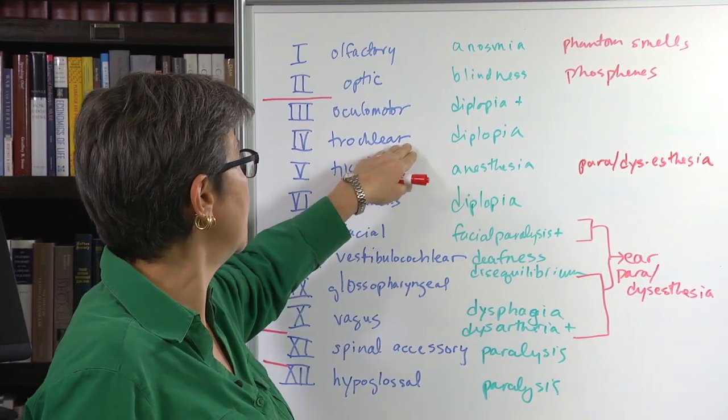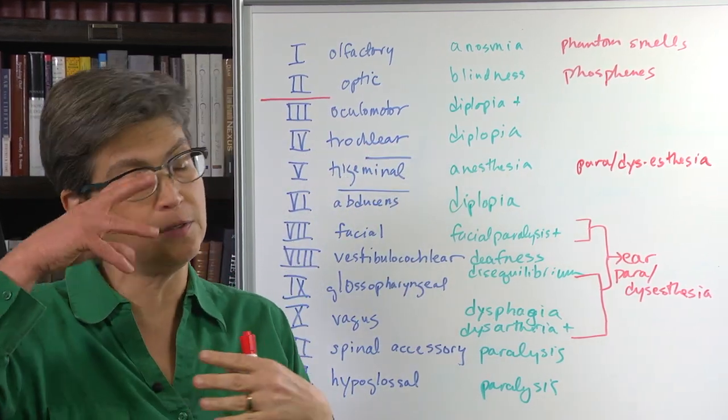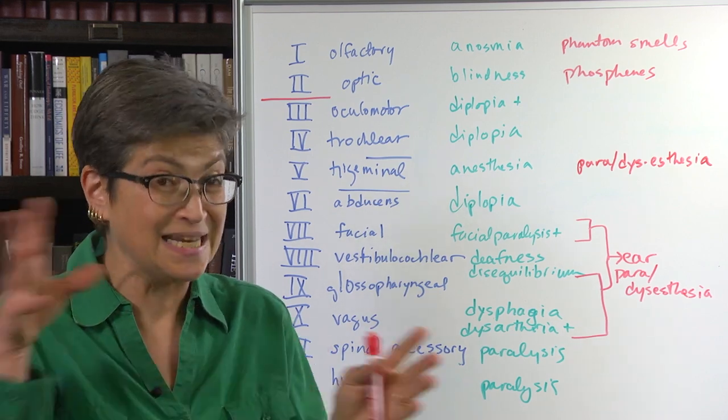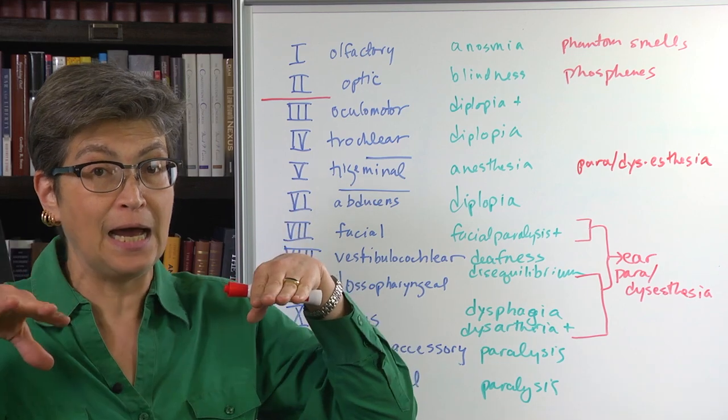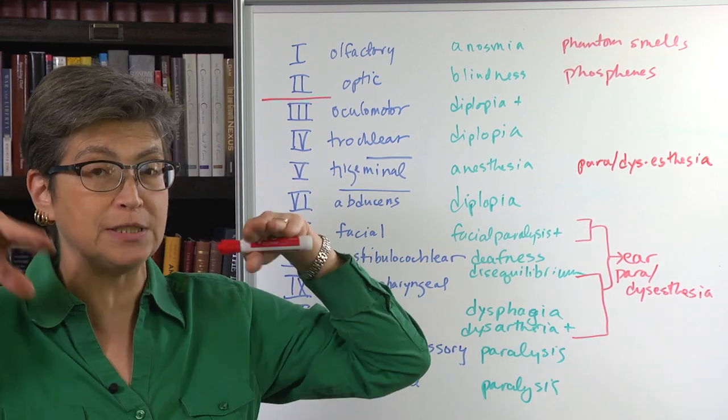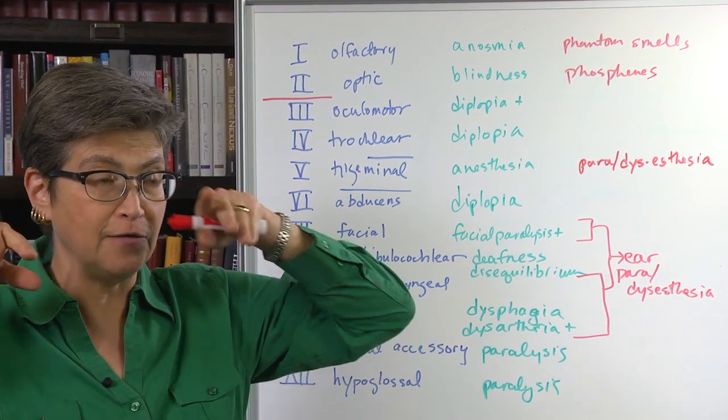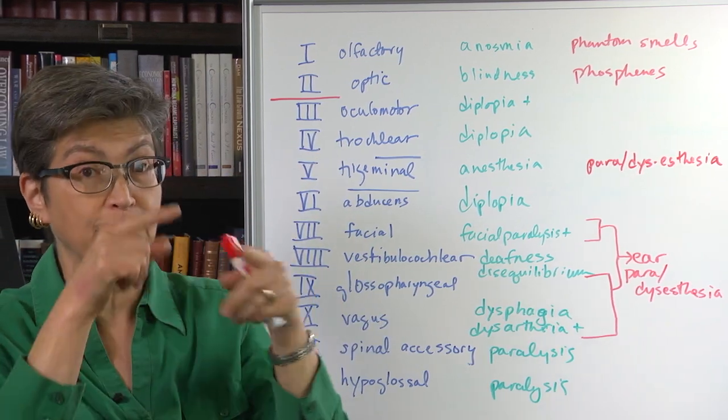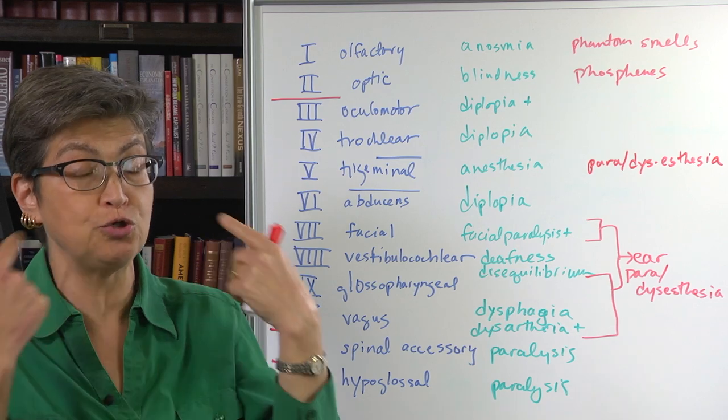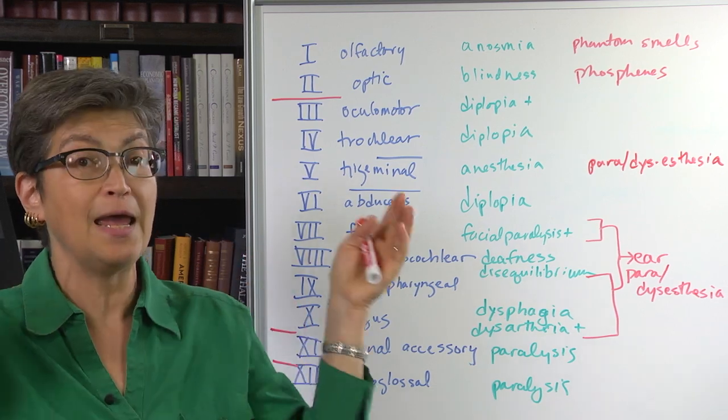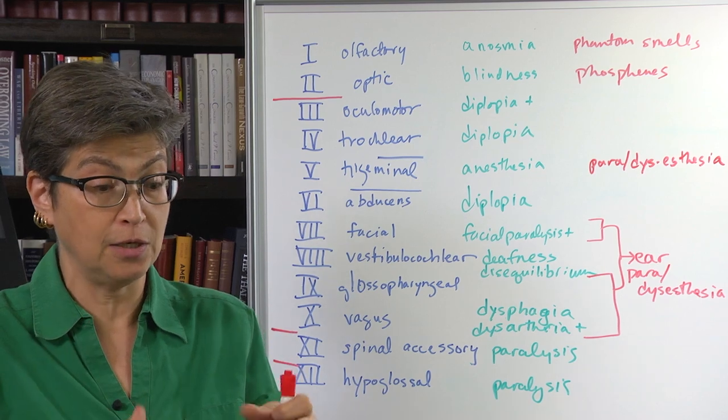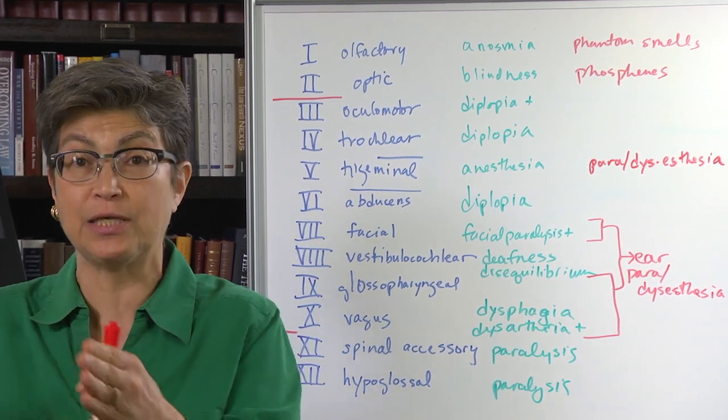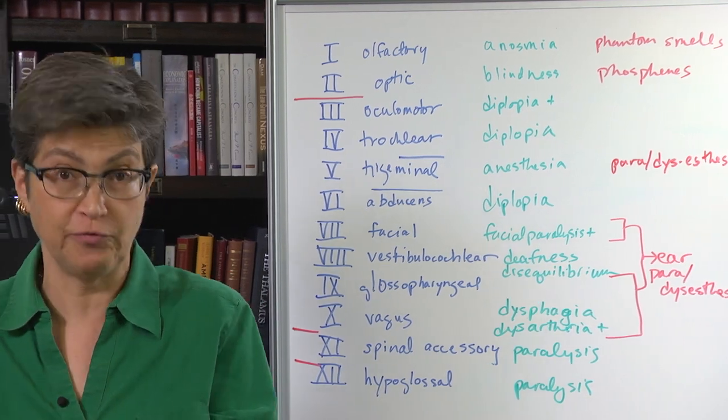Trochlear lesion, you get again, diplopia. If one of the muscles is not working to correctly align the eyes, then the two eyes are going to see different things. If this eye is looking here and that eye is looking there, we are seeing two different scenes on our two different retinas, and that's getting merged in the brain to show us two different images simultaneously. And that we experience as double vision or diplopia.